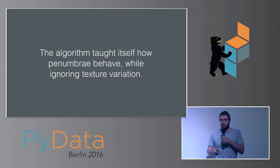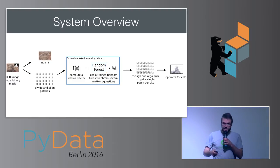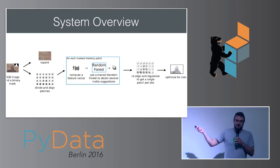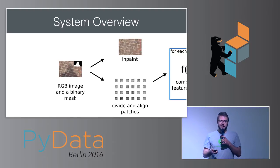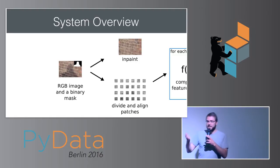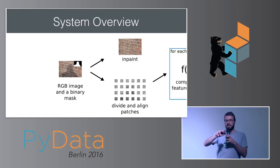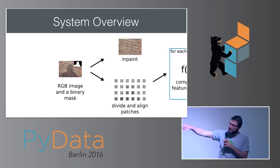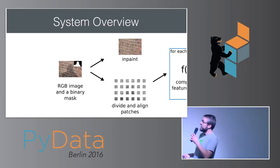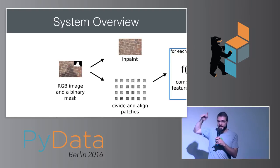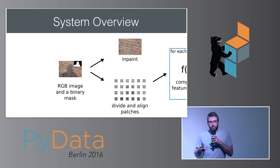In effect we have a system that teaches itself how to remove shadows. Here's an overview of the whole pipeline. We get an RGB image together with a binary mask, then do two things. First, content-aware fill — like Photoshop's feature where you select a region, throw it out, and replace it with something that looks plausible. It has some problems: it doesn't deal with structure very well, and it can't really reconstruct mortar and bricks well. But it works as an initial guess. Second, we divide the image into small patches.